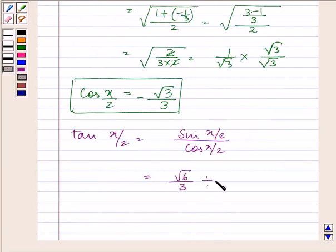It will be √6/3 divided by -√3/3, which on simplification will give us the value as -√2.